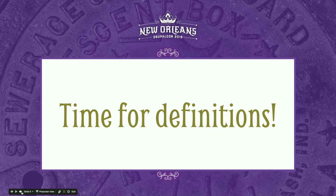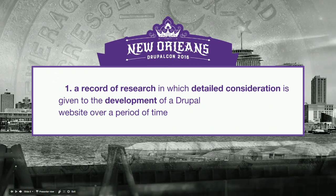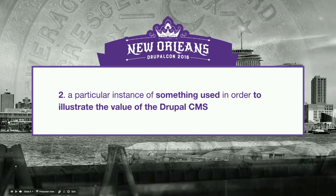Since I'm a writer, I figured that we would start the session with some definitions, and I went to the dictionary, which is my favorite book. What is the definition of a case study? A case study, according to the dictionary, is a process or record of research in which detailed consideration is given to the development of a particular person, group, or situation over a period of time — a particular instance of something used or analyzed in order to illustrate a thesis or principle. Really opaque stuff, so I changed it. It is a record of research in which detailed consideration is given to the development of a Drupal website over a period of time, and it is a particular instance of something used in order to illustrate the value of the Drupal CMS.